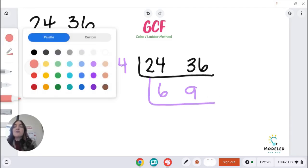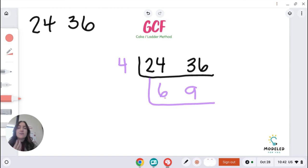But I noticed something about 6 and 9. There's something that can still be pulled out of 6 and 9. I didn't get as low as I could possibly get. So now I'm going to take 6 and 9 and I'm going to think to myself,